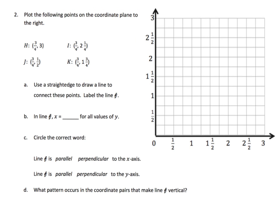This next part is more of the same except they've removed some of the scaffolding and made it a little more complicated by including fractions. We're going to plot the following points and label them H, I, J, and K. Let's do it in black. H is at three-quarters on the x-axis.